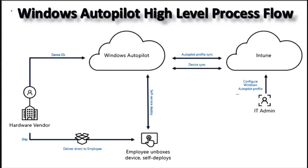Now let's discuss about the Windows Autopilot high level process flow. This is a thousand feet overview of the Windows Autopilot process. We know that in an Autopilot process we have mainly three key players involved.